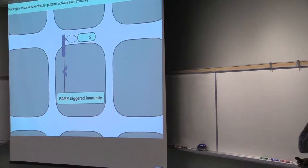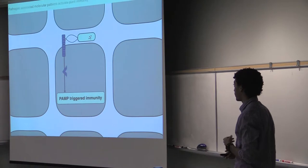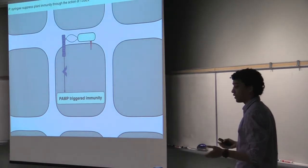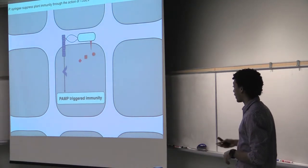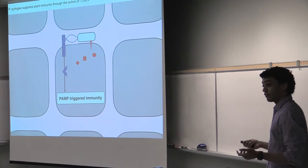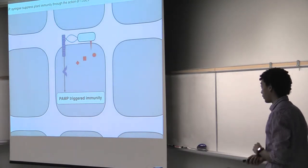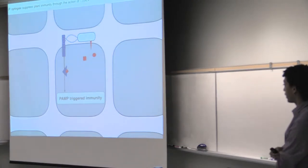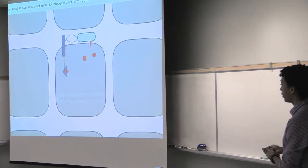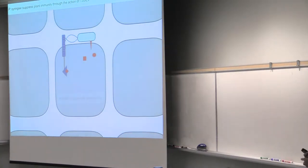But Pseudomonas syringae gets its name from this remarkable apparatus that Pseudomonas syringae has that is very analogous to a syringe, which the pathogen uses to deliver these virulence factors directly into the cell of the plant. And these virulence factors are called type 3 secreted effectors. And you can imagine that once these effectors are there, they target proteins involved in immunity and prevent PTI from being activated. And once this happens, then the pathogen can grow and end up causing disease.